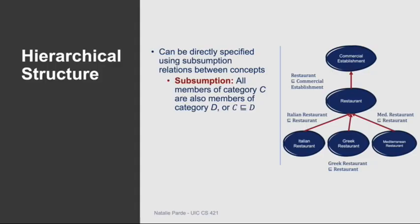There are a couple different ways we can define hierarchical structure using description logics. One way is to directly specify subsumption relations among concepts. When a category C is subsumed by a category D, that means that all members of C are also members of D. For example, if the category restaurant is subsumed by commercial establishment, and Italian restaurant is subsumed by restaurant, then an element Giordano's that belongs to Italian restaurant would also belong to restaurant and furthermore to commercial establishment.